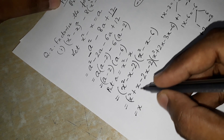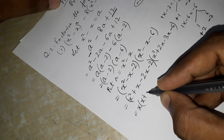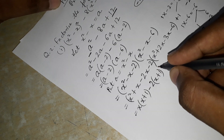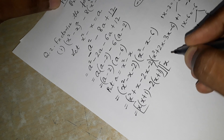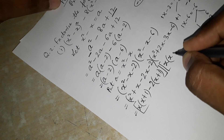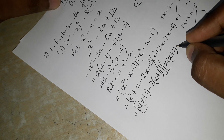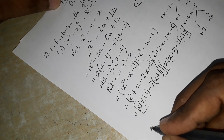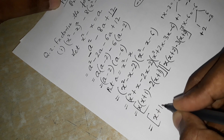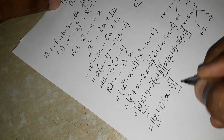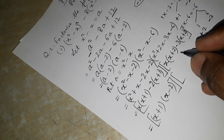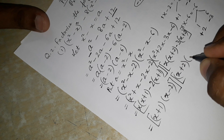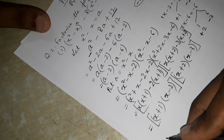From x² + x - 2x - 2, take x common from first two terms to get x(x + 1), and take minus 2 common from last two to get minus 2(x + 1). So the first bracket gives (x + 1)(x - 2). From x² + 2x - 3x - 6, take x common to get x(x + 2) and minus 3 common to get minus 3(x + 2). So the second bracket gives (x + 2)(x - 3).